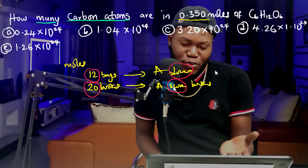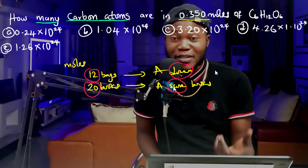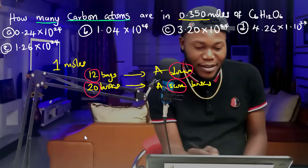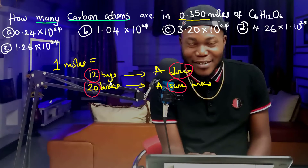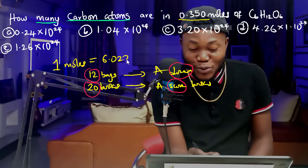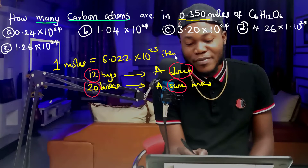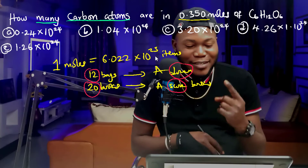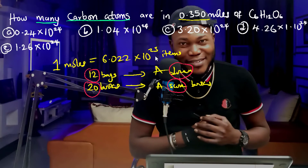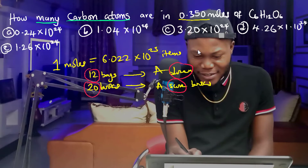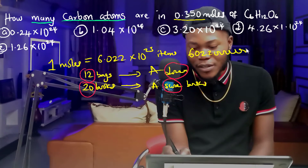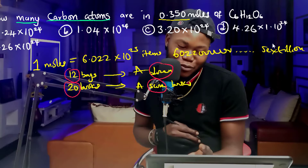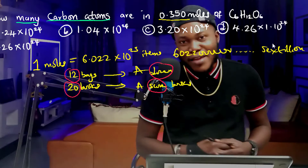So 'dozen' is representative of 12, and 'score' is representative of 20. In the same vein, when I say I have one mole of something, I'm saying I have 6.022 times 10 to the 23rd items of that particular thing. It could be anything — even pens. That's a very large number, called a sextillion. So 'mole' is just a shorthand for writing this very large number.